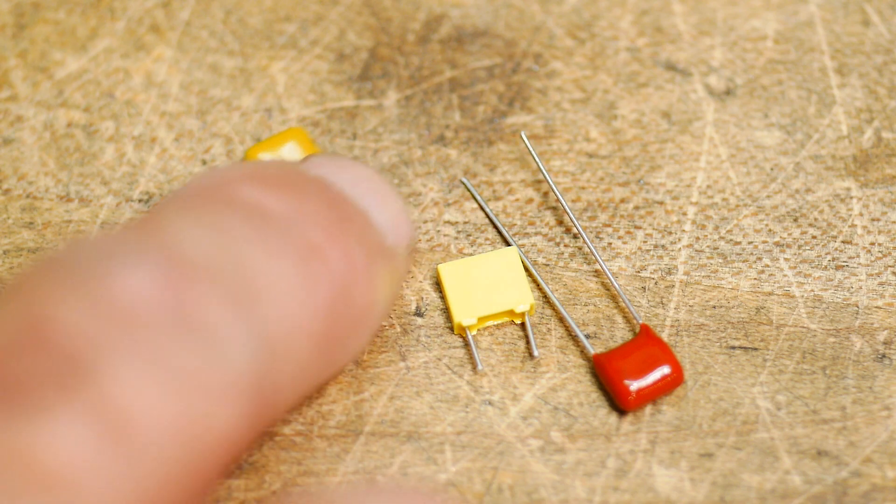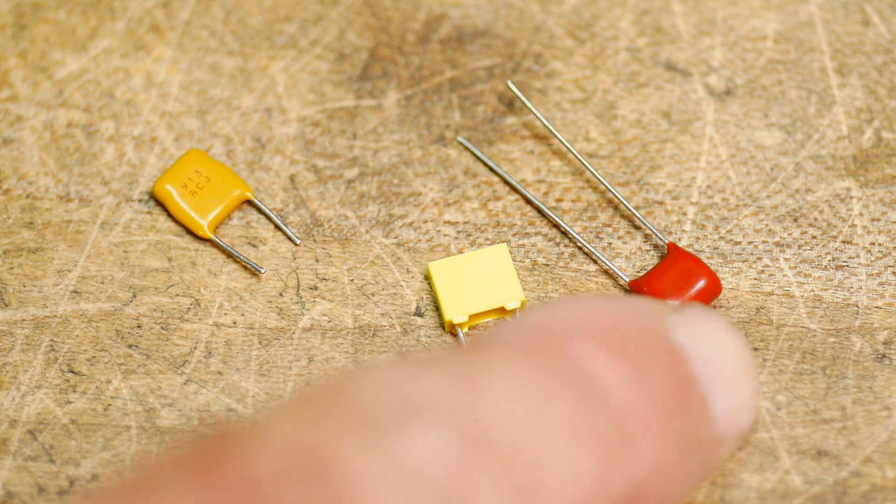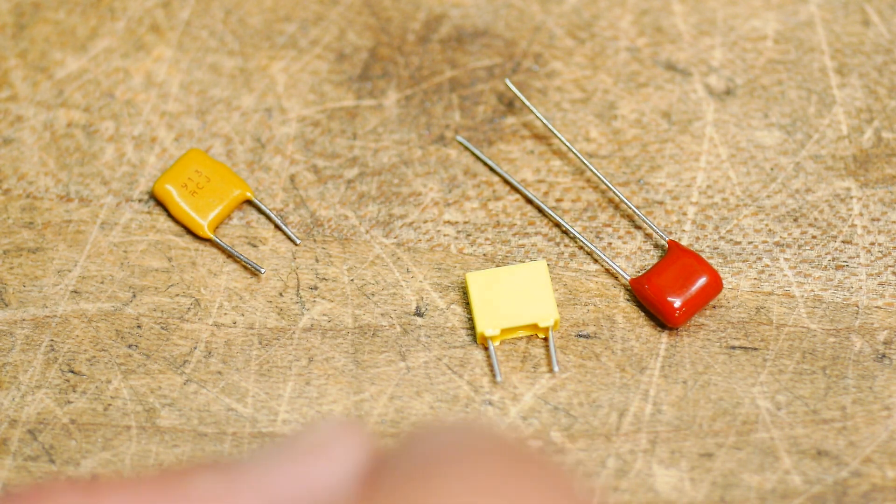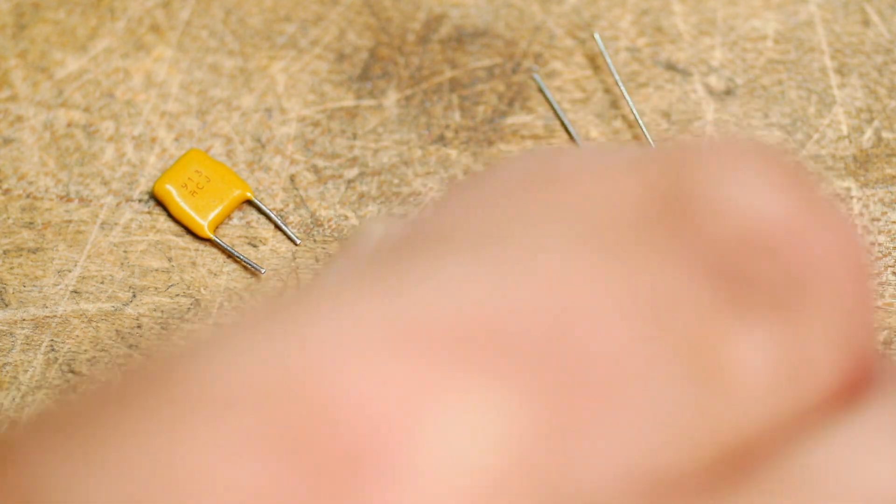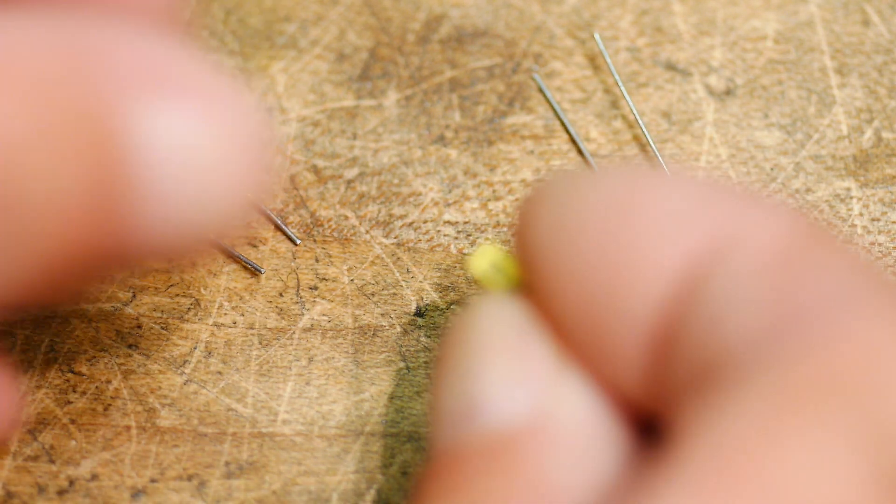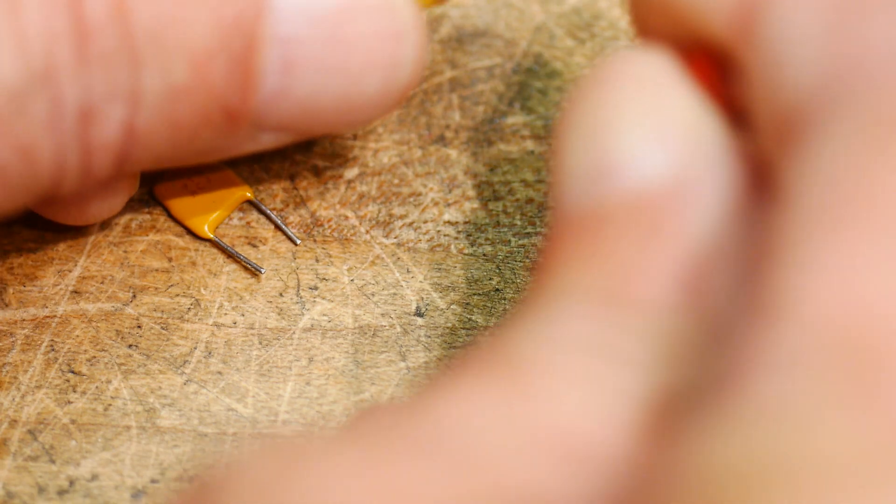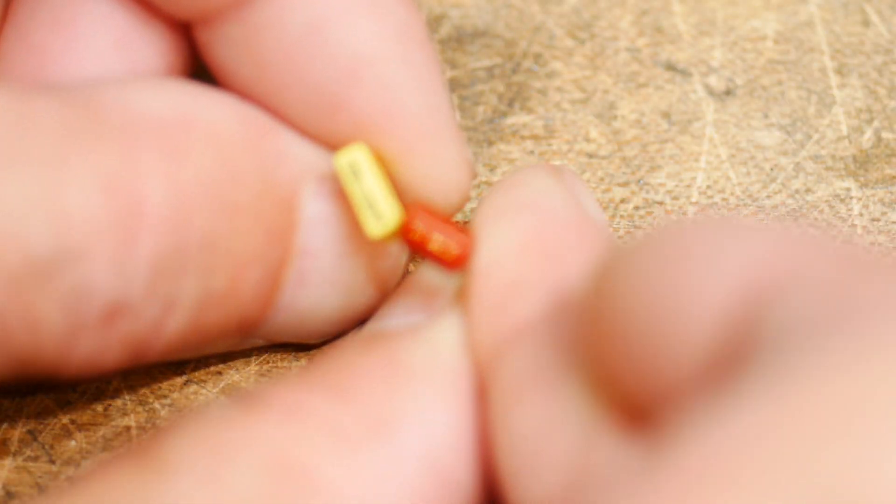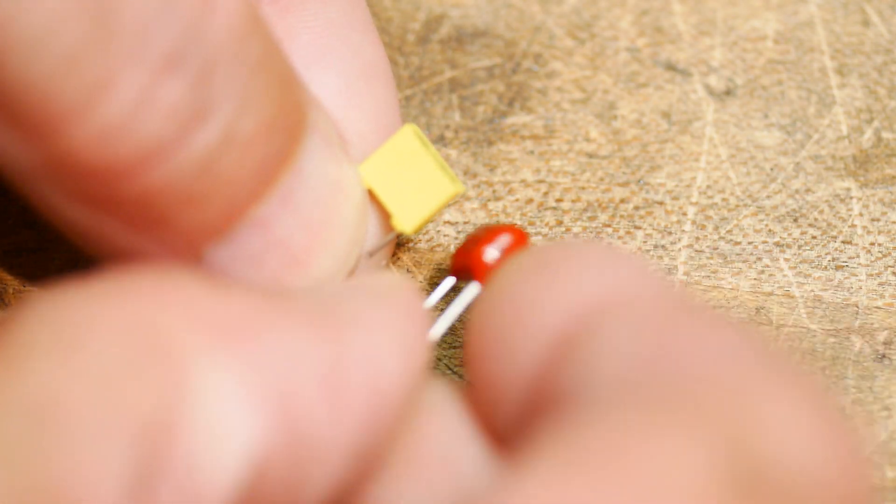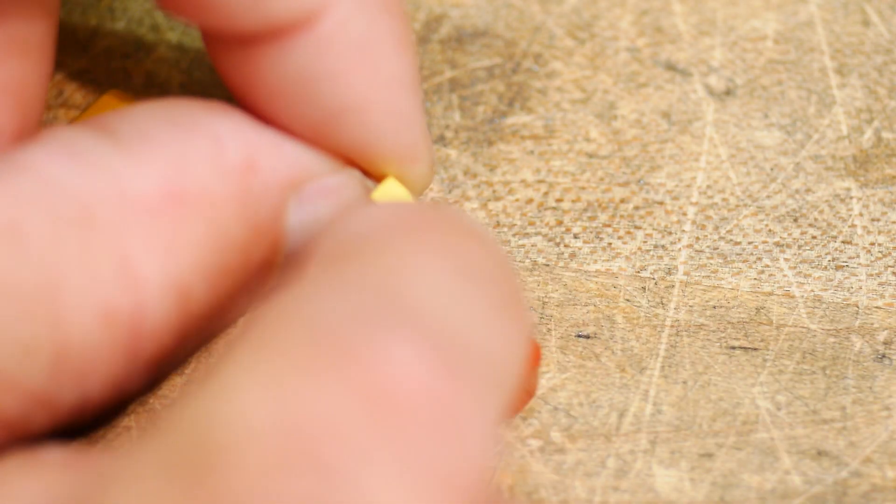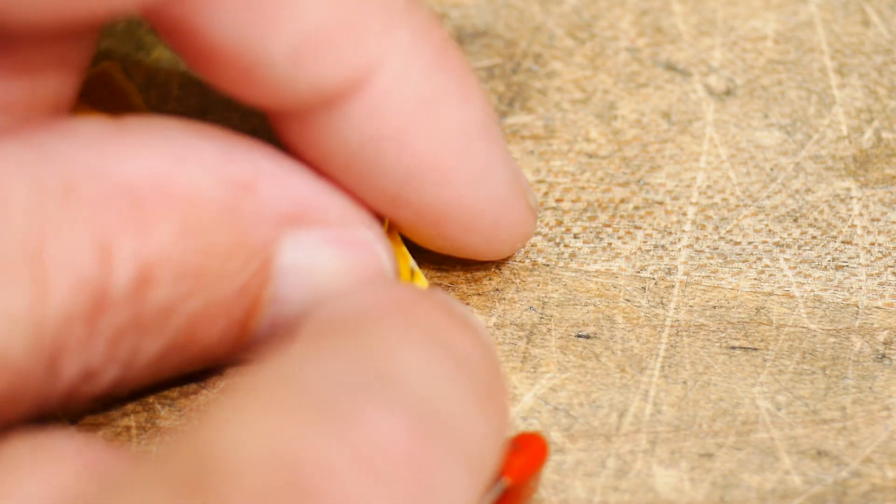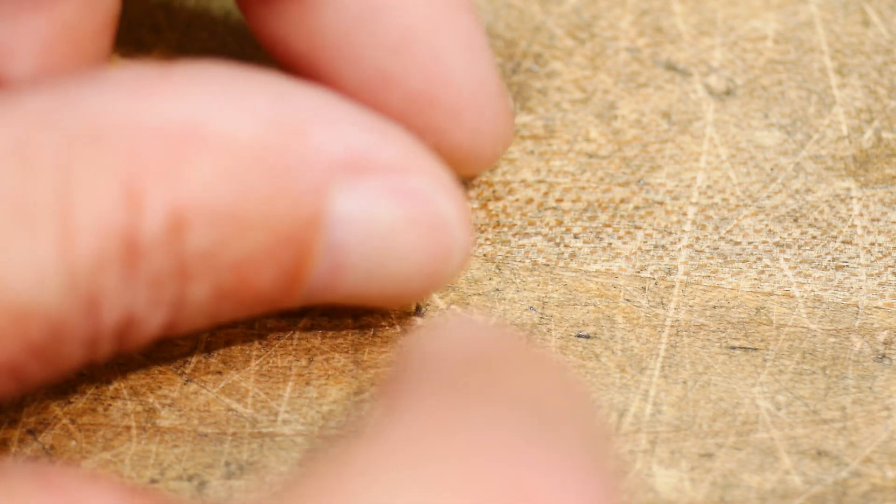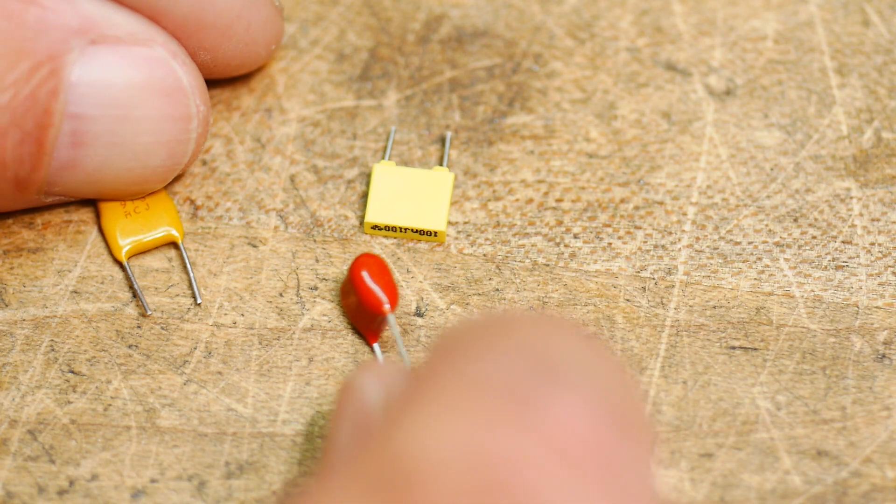So this is the ceramic one, but these are metal film capacitors and these two are both the same - they're both 100 nanofarads. One's kind of a dipped one and one's in this little plastic package that's then filled up from the back. So they're different.